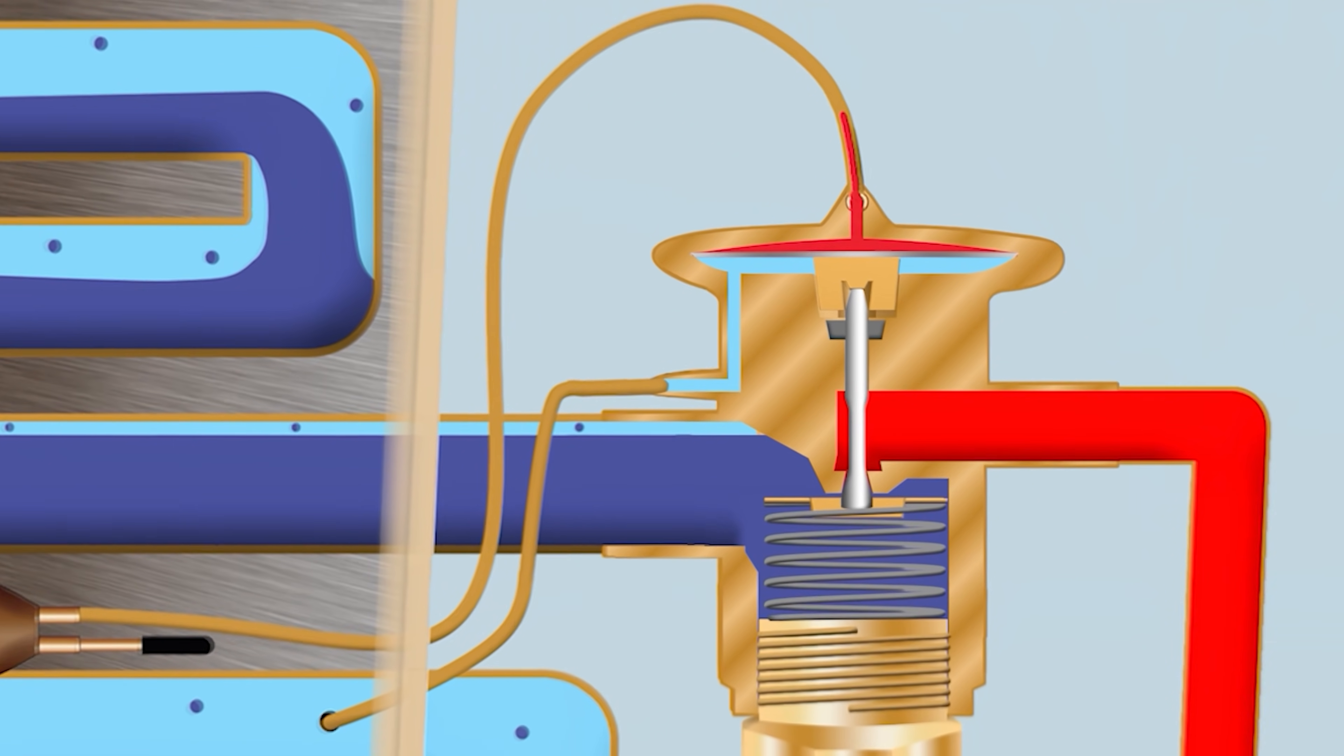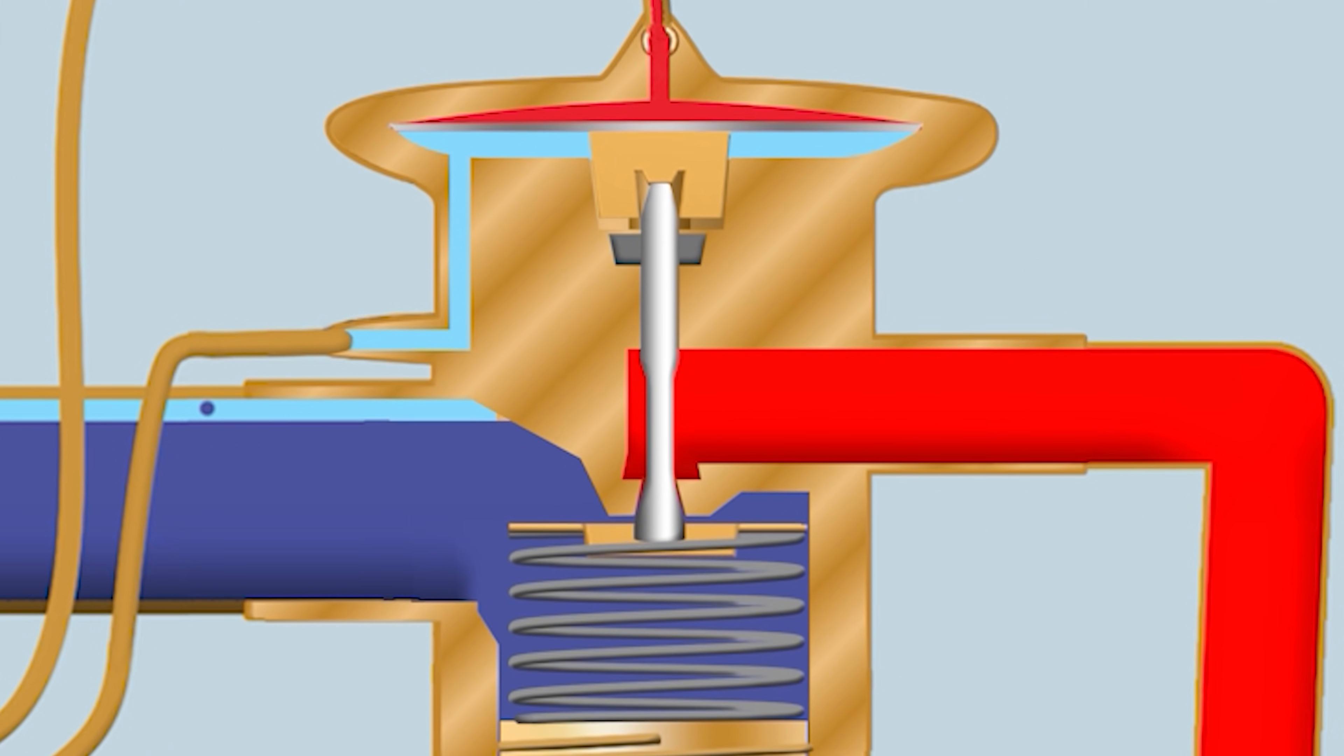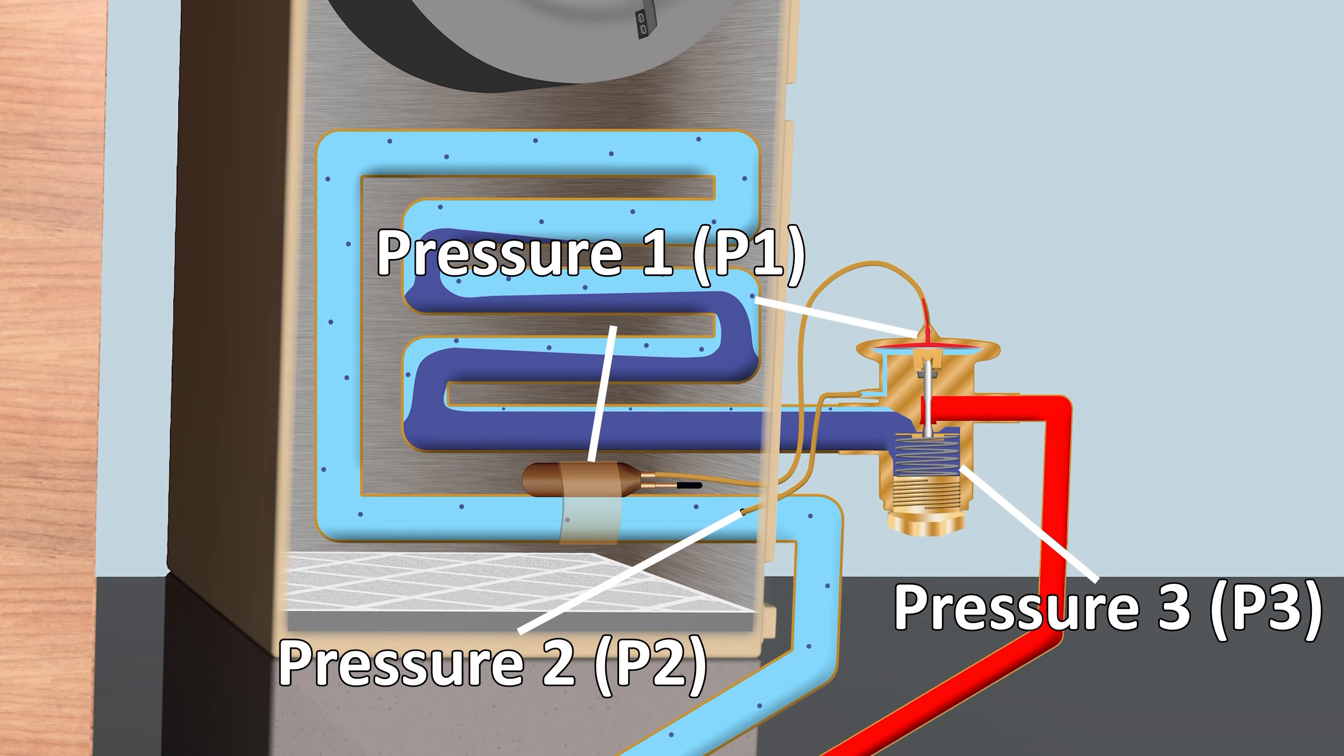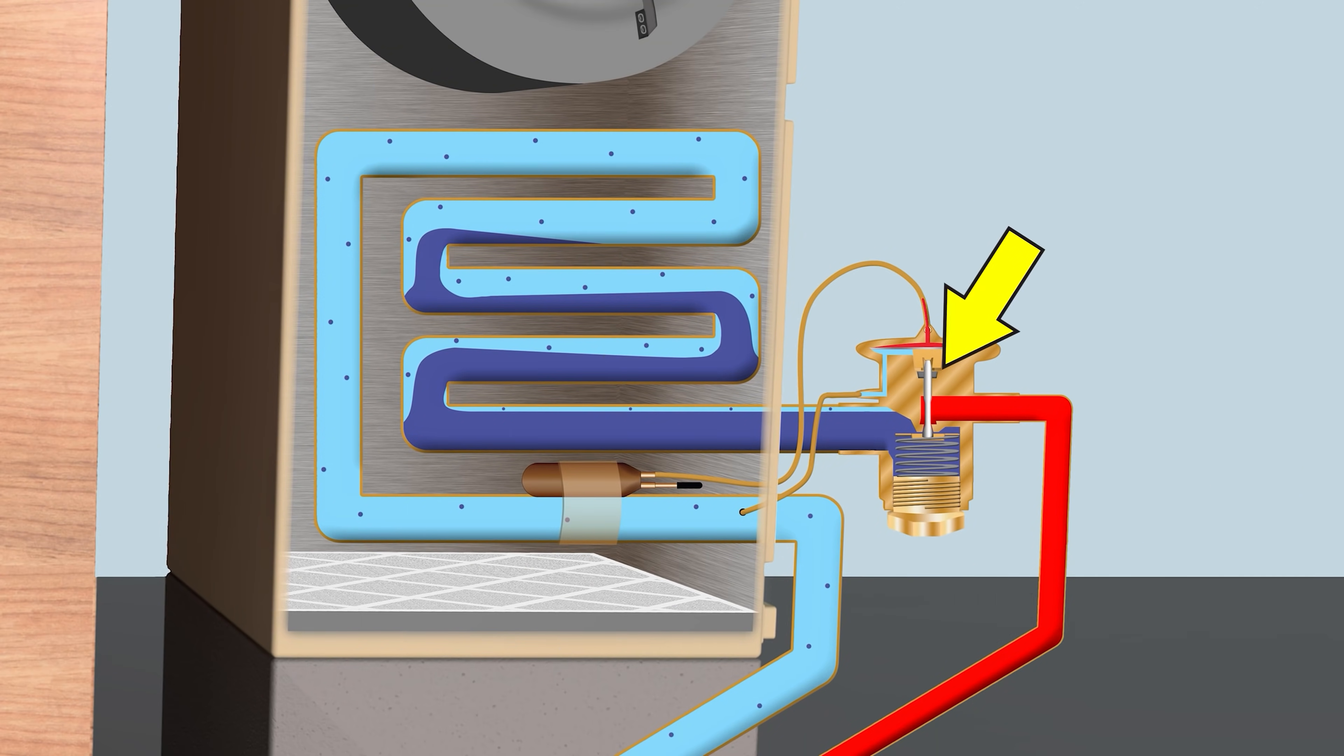Today what we're going over is the thermostatic expansion valve's operation, and I'm going to be going over three examples of the three pressures applied on the thermostatic expansion valve. This is a metering device that takes high pressure liquid entering it and only allows low pressure liquid out.